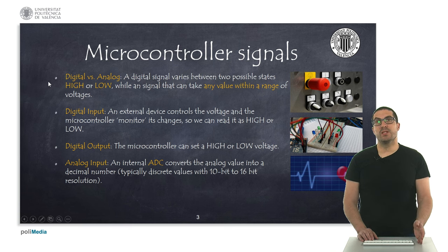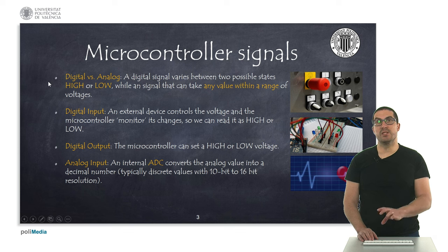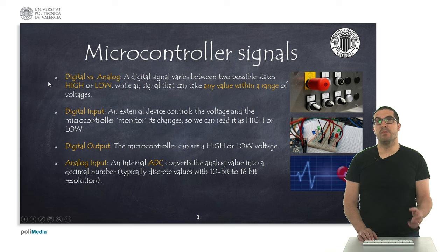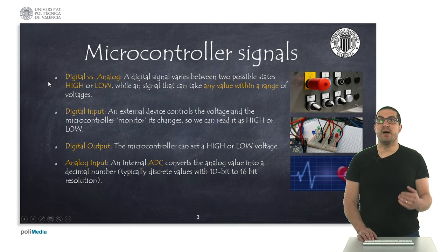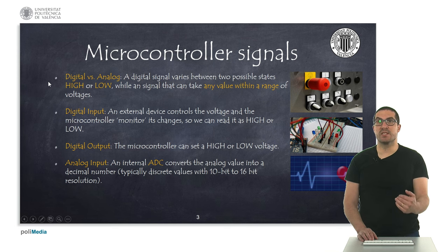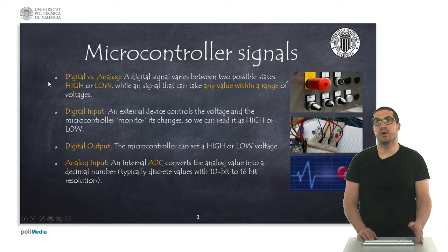In microcontrollers, we have digital inputs, in which a standard device controls the voltage and the microcontroller basically monitors the changes of the signal, so it can read high or low. We also have digital outputs, where the microcontroller sets the voltage to high or low, depending on what you want.